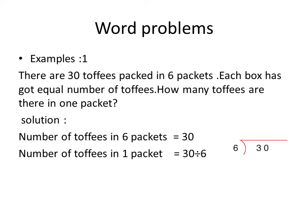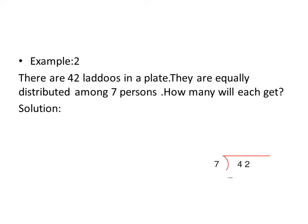Now it becomes 30. Now recite the table of 6 until you get 30. 6 ones are 6, 6 twos are 12, 6 threes are 18, 6 fours are 24, 6 fives are 30. Write 30 here and 5 above the line as shown. Now subtract it and you will get 0. It means each packet has 5 toffees.